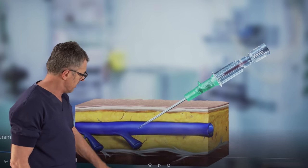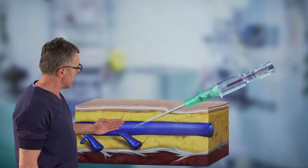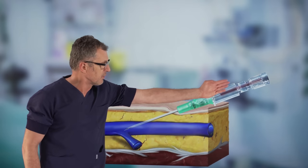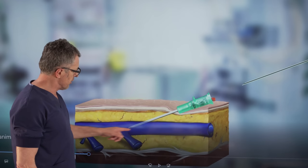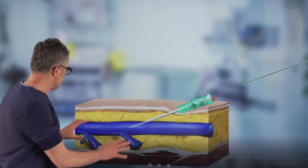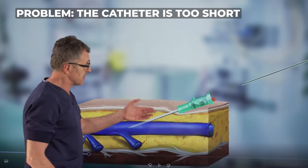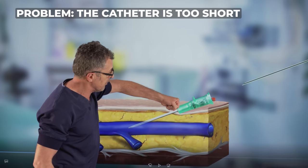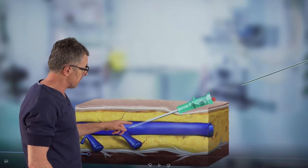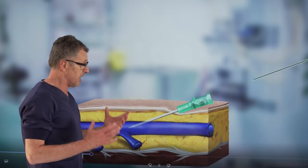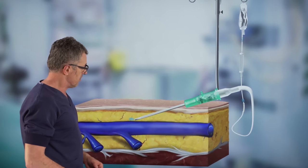As soon as the catheter enters the vein, we will immediately see the flashback, as we call it, because the blood will want to go into the expansion chamber. And there it is. So now we know that we're inside the vein. And at this point in time, what we simply do is continue advancing the catheter, lowering the angle, and pull the needle out, leaving the catheter inside. But again, if you can take a look at this image, you can see how very little of the catheter is inside the vein to make it stable.